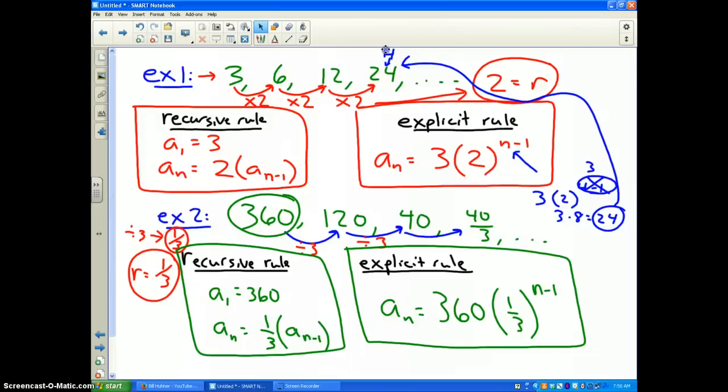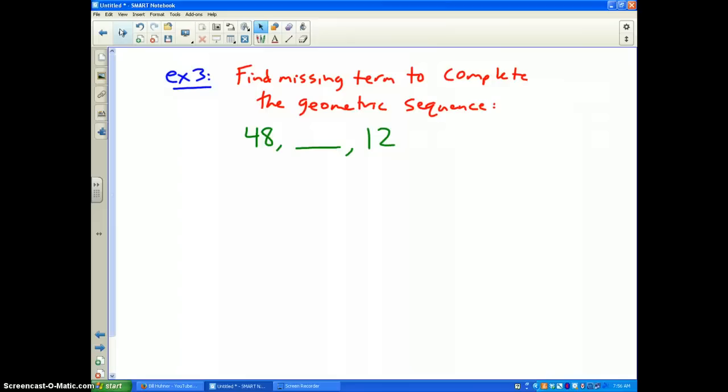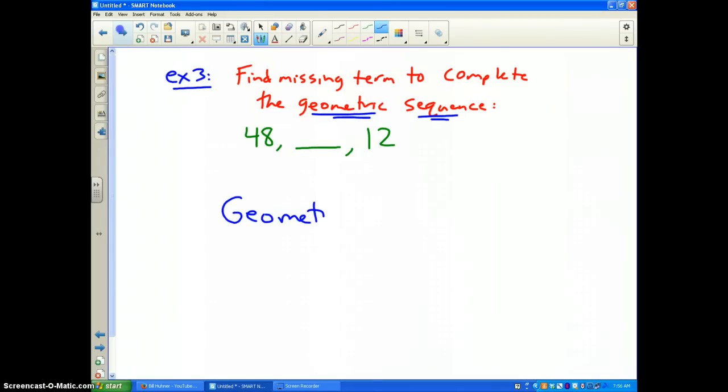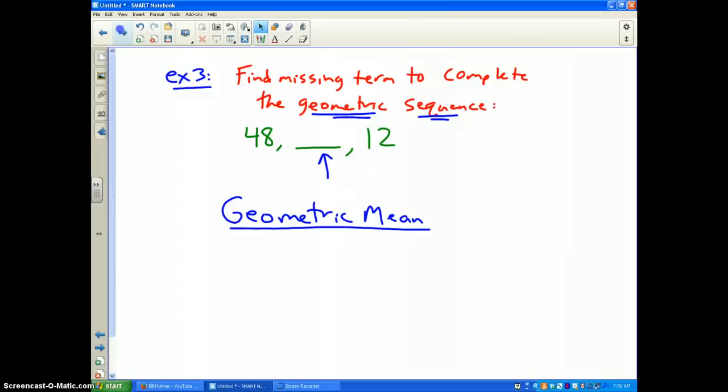Now what if we're missing a term? It says find the missing term to complete the geometric sequence. It tells you it's geometric. Well in order to do this, just like on the arithmetic video, there is what we call the geometric mean. When there is only one term missing between the two, the geometric mean basically says take the two numbers on either side of it. I'm sorry, this number is supposed to be a 3. This number is supposed to be a 3. Please fix that. Take the numbers on either side of it, which is 48 times 3, and take the square root of the answer and that will be your number in between.